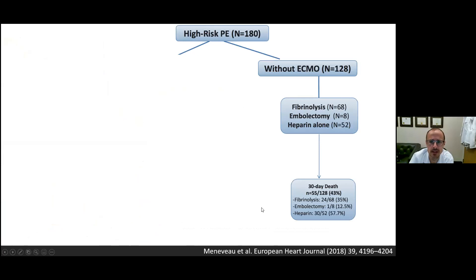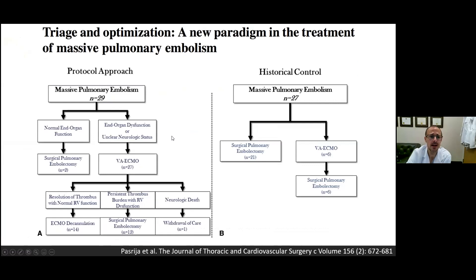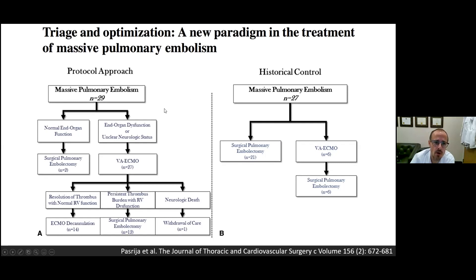Mechanical support also gives an opportunity to perform embolectomy without operating in the context of acute thrombolytic therapy and its associated bleeding complications. Data from a very aggressive pulmonary embolectomy center compared two approaches: a historical control where 21 patients had initial surgical pulmonary embolectomy and 6 were supported with VA ECMO then surgical embolectomy, versus a modern protocolized approach aggressively supporting patients with VA ECMO upfront, where only 2 went straight to embolectomy and 27 received initial MCS.